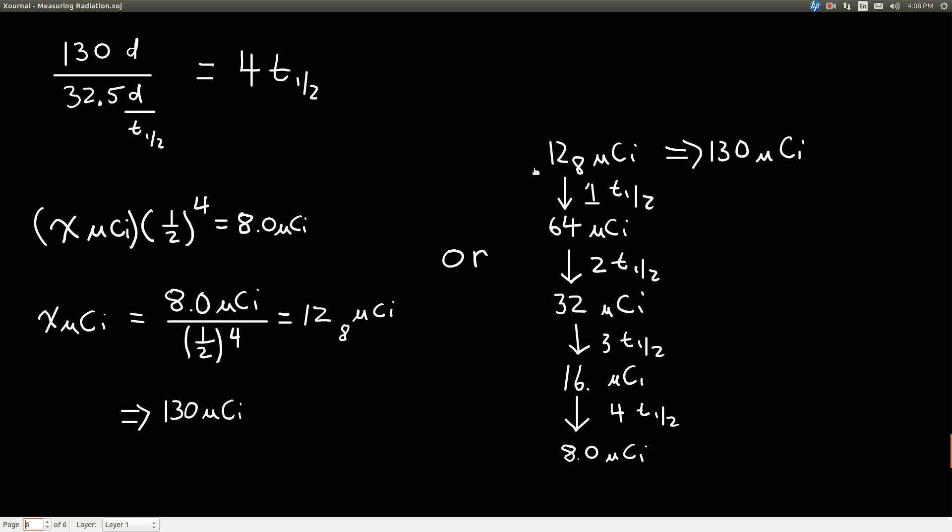So one way to do it would be to work our way backwards. So if we now have 8 microcuries after four half-lives, if we double that, 8 times 2 is 16, that means after 3 half-lives there were 16 microcuries. Double the 16 is 32, so after 2 half-lives there was 32 microcuries of activity. And then double that, that's 64, so after one half-life there were 64 microcuries of activity. So if we double that one more time, 128, so around 130 microcuries was the initial activity.